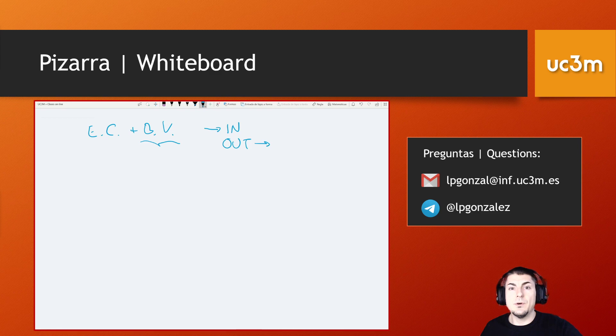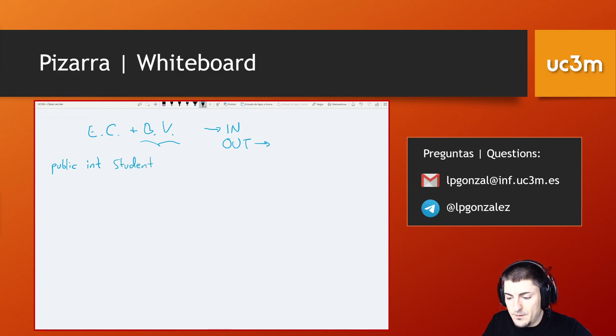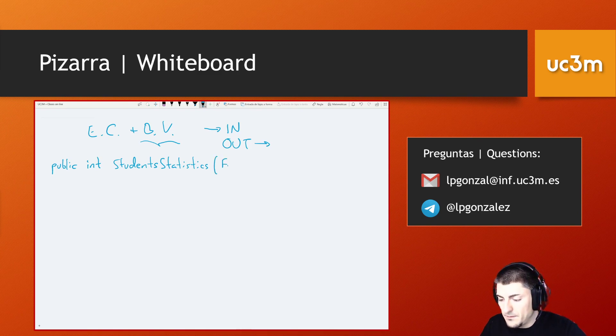Imagine we have to code a specific function and the function has to return the number of students that have passed a specific subject. So we may have a function interface or definition like this: public int, because we want to get the amount of students that passed, student statistics that gets a file with a specific set of values.